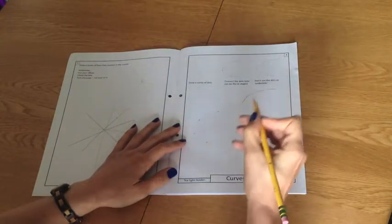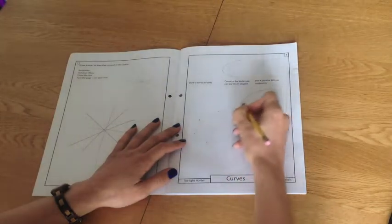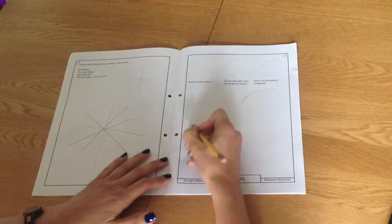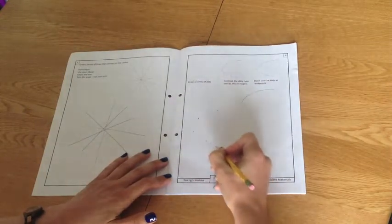And then just like before, we're going to be ghosting the line. So you're going to move your pencil, and again, I'm using my shoulder and my elbow to do this. I'm going to kind of move around and see if I can envisage where my line is going to go.